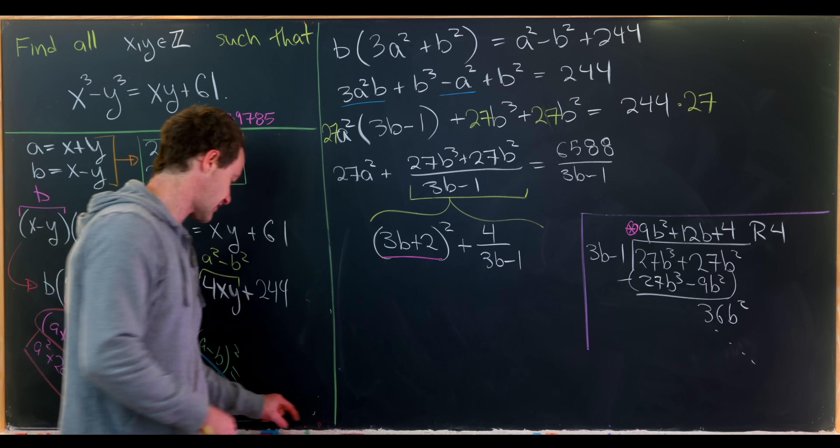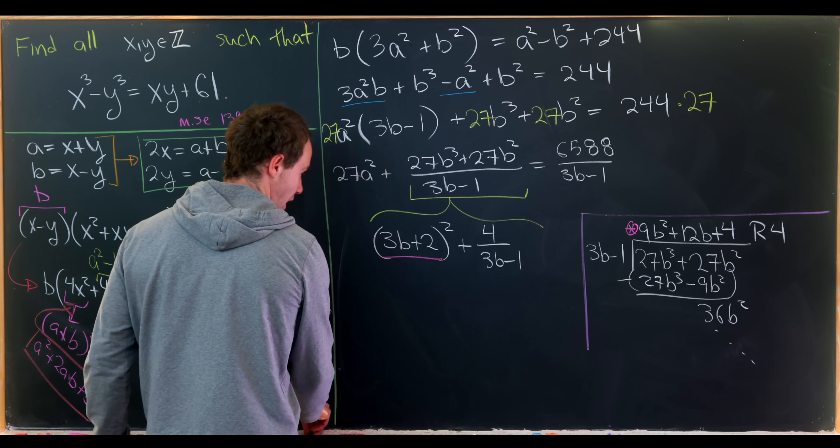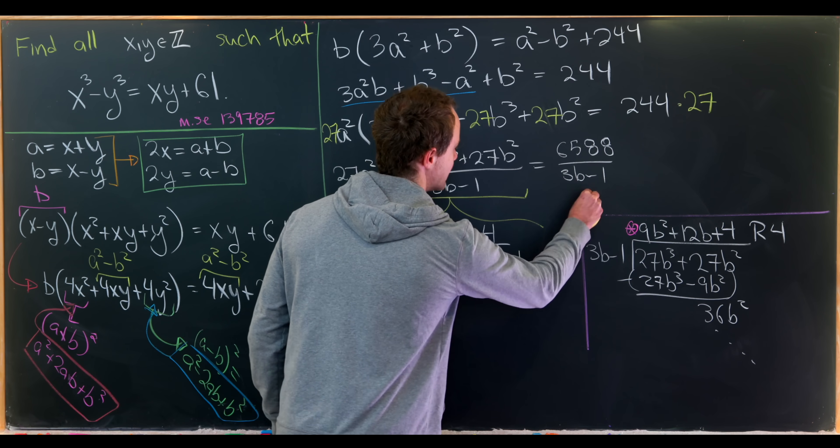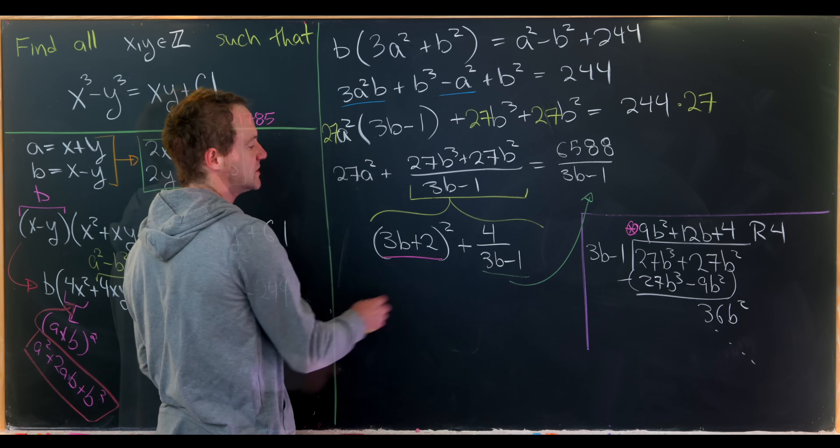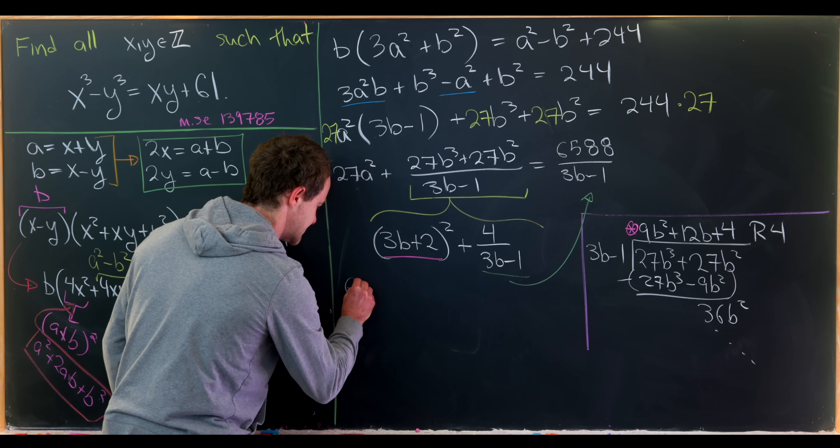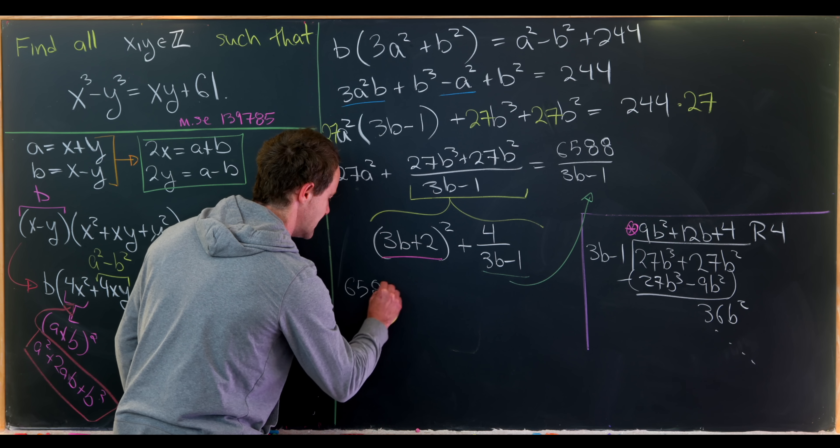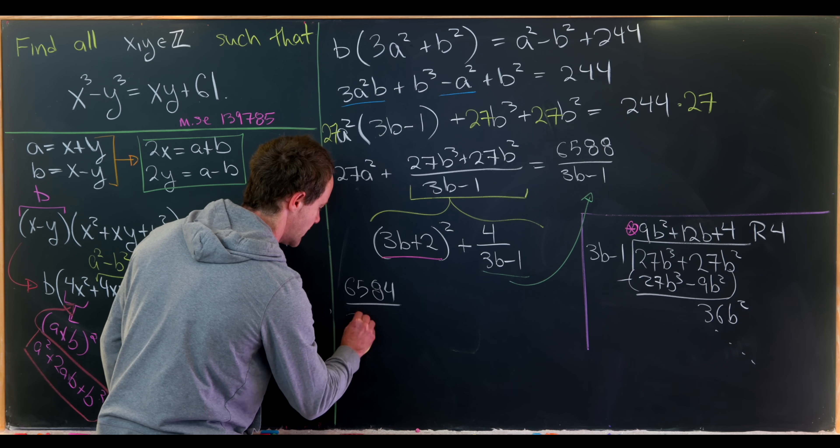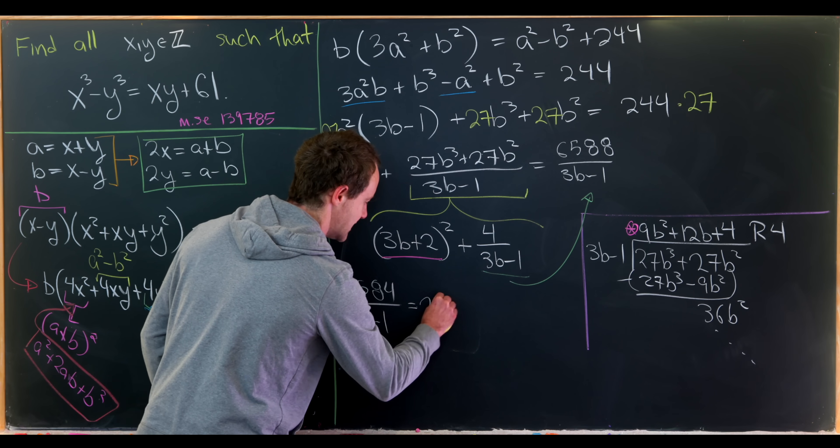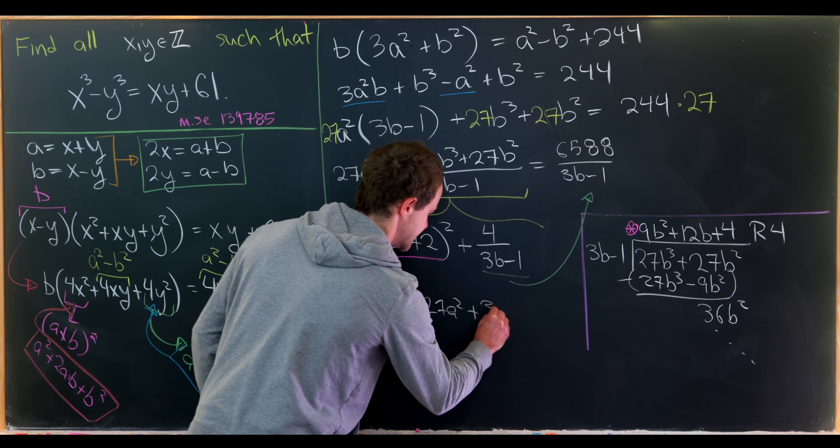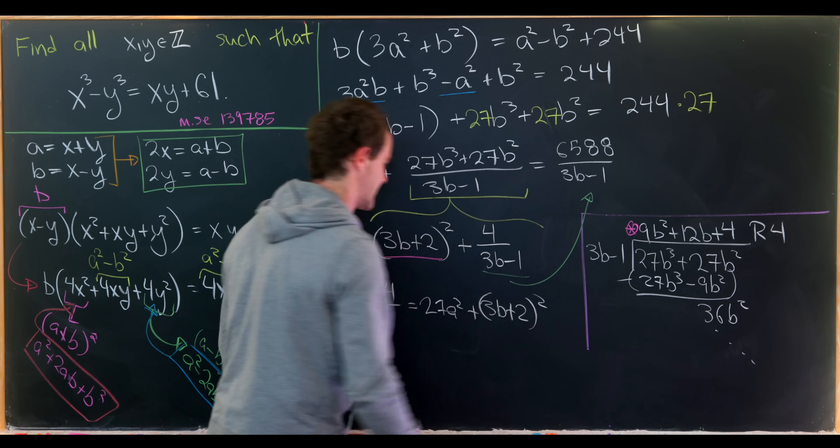Now we can take this 3b minus 1 term and move it over to the other side of the equation and we have something nice to work with. Moving that over we'll have 6584 over 3b minus 1 equals 27a squared plus 3b plus 2 squared.